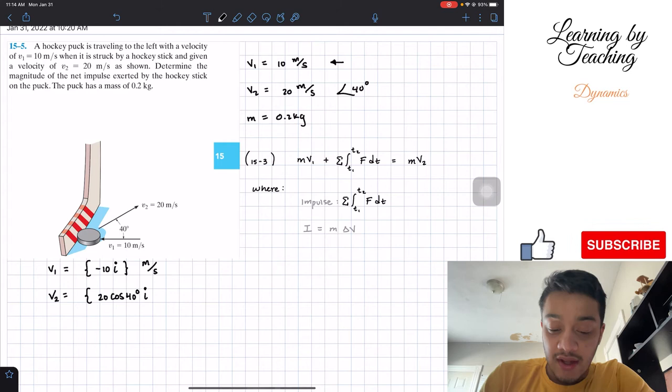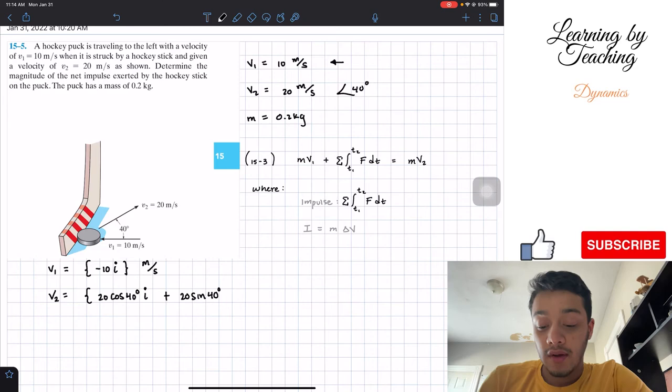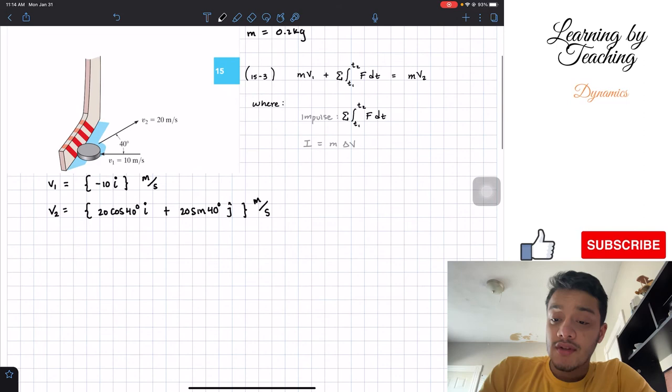Then we have plus 20, the magnitude, multiplied by the sine of 40 degrees, since it is the y component. We are going to give this a j for the y component. This will be the total vector for my velocity 2.